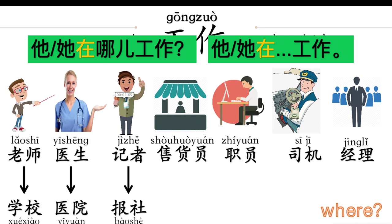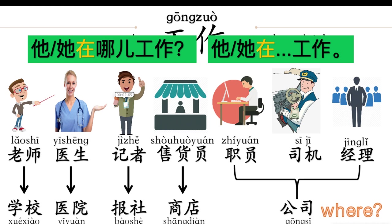报社 — publisher. 售货员，他在哪儿工作? 他在商店工作. 商店, store. 职员，司机，经理，他们在哪儿工作? 他们在公司工作, company. 你记住了吗? Pattern: 他在哪儿工作? 他在 [location] 工作.